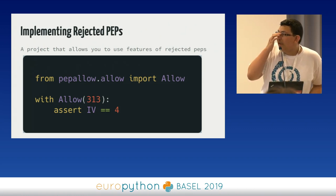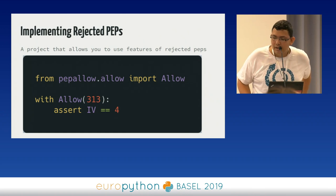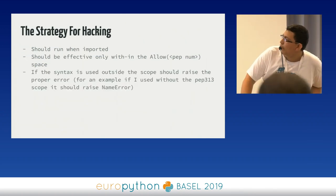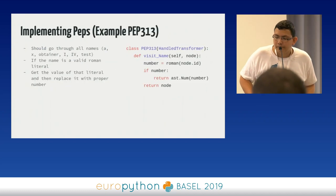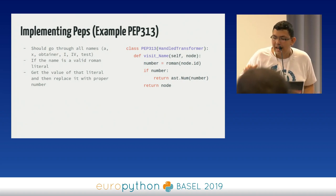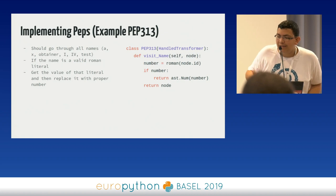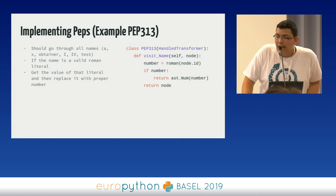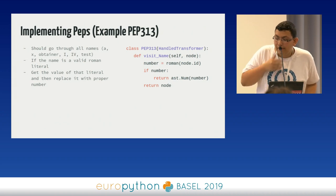This is the code for implementing rejected PEPs like PEP 313. We are going to use Roman literals as Python integers. Our code will run when imported and will only be effective inside a specific scope, raising proper error messages when used outside. For implementing this PEP, we use the `ast` module's NodeTransformer. It goes through every name node — like A, X, test, and capital Roman numeral names like X, I, V — and checks if it is a valid integer representation, returning a new node.